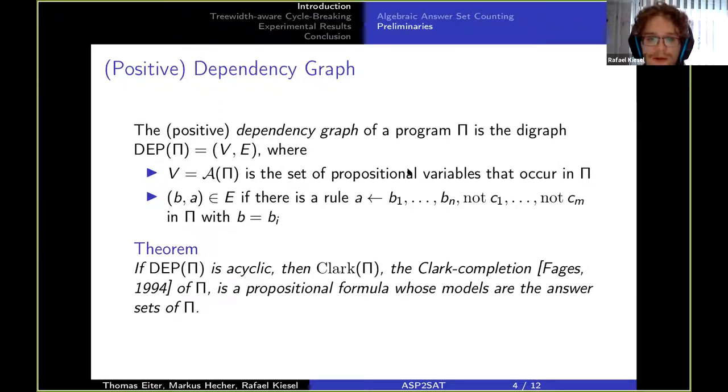A well-known result that probably all of you know is that if the dependency graph of the program is acyclic, then we can simply apply the Clark completion and get a propositional formula which has the same models as the program has answer sets.